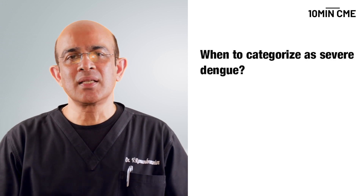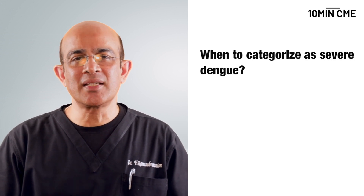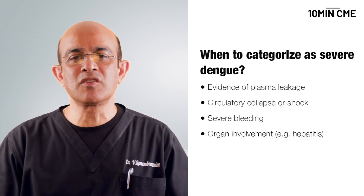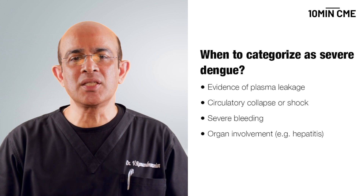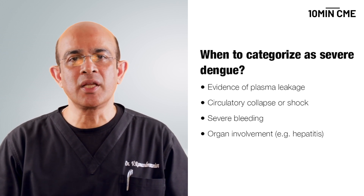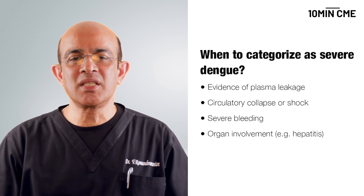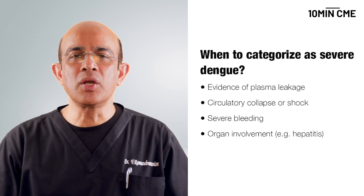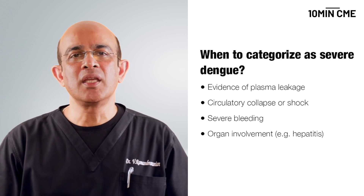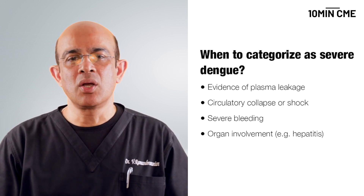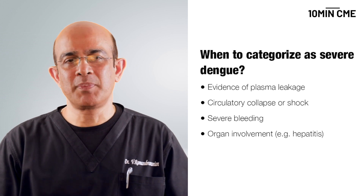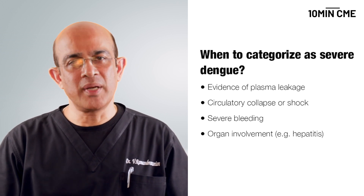A person is categorized as having severe dengue when there is evidence of plasma leakage which may lead to circulatory collapse or shock. There may be severe bleeding or organ involvement in the form of hepatitis or other specific complications.